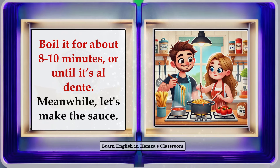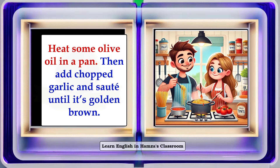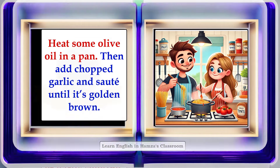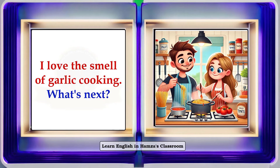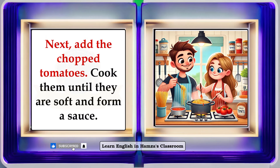Meanwhile, let's make the sauce. Sounds good. How do we make the sauce? Heat some olive oil in a pan. Then add chopped garlic and sauté until it's golden brown. I love the smell of garlic cooking. What's next? Next, add the chopped tomatoes. Cook them until they are soft and form a sauce.